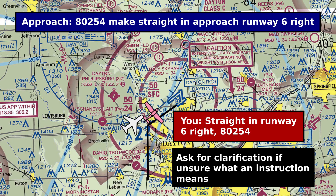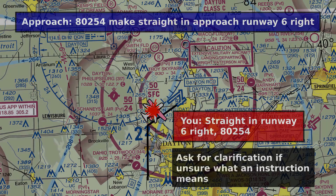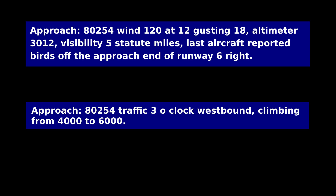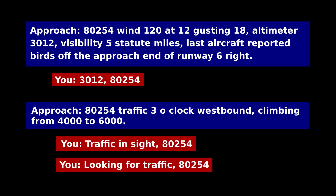The worst thing you can do is read back an instruction and then not follow it. Remember that you only have to read back the key elements of instructions that you're given. So if the controller gives you a full weather report, or tells you that another aircraft is at your 3 o'clock climbing from 4,000 to 6,000 westbound, you don't have to read all that back. In the first case, you can just respond with your tail number and the altimeter setting, and in the second case, you can say traffic in sight or looking for traffic.